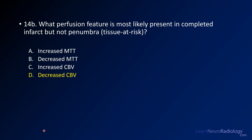The question was about which feature helps you differentiate penumbra from completed infarct — that is blood flow and blood volume, and in this case what you want to think about is blood volume. As long as you have maintained blood volume, you may be getting adequate perfusion from collaterals, so your tissue may not die yet. Once you have decreased cerebral blood volume, that's thought to be core or completed infarct.